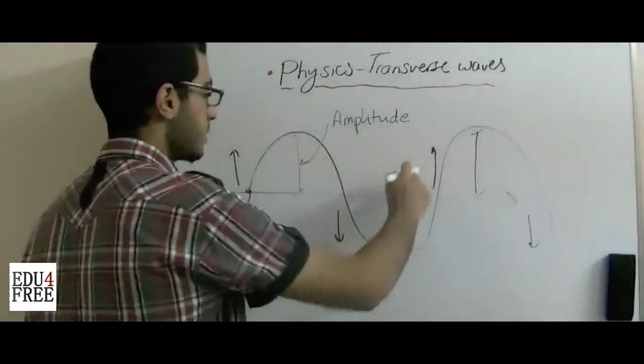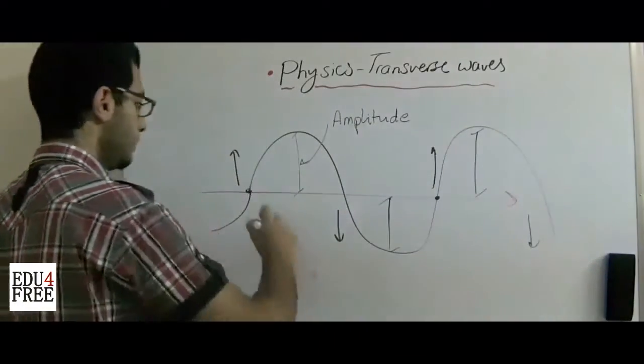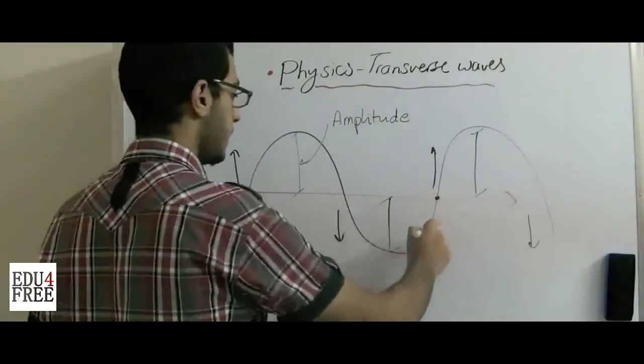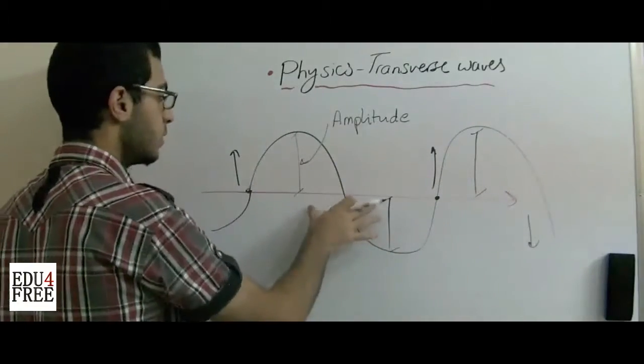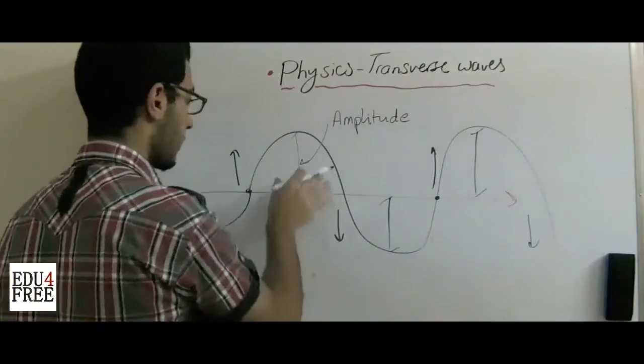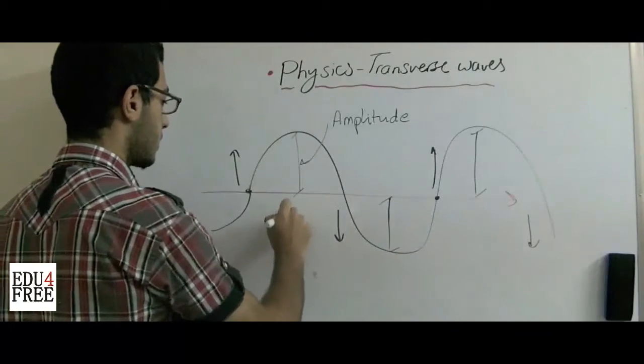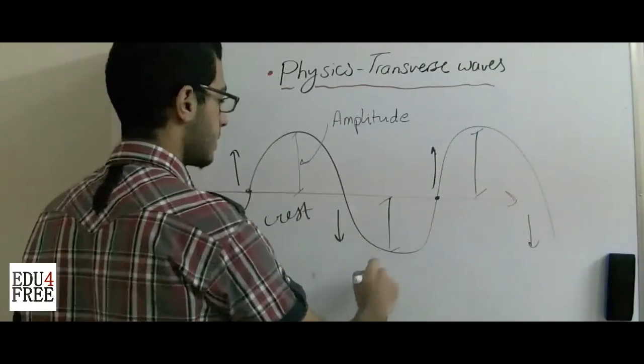Here the complete oscillation is the distance between two successive crests. And a crest. This is called crest. And this is called trough.